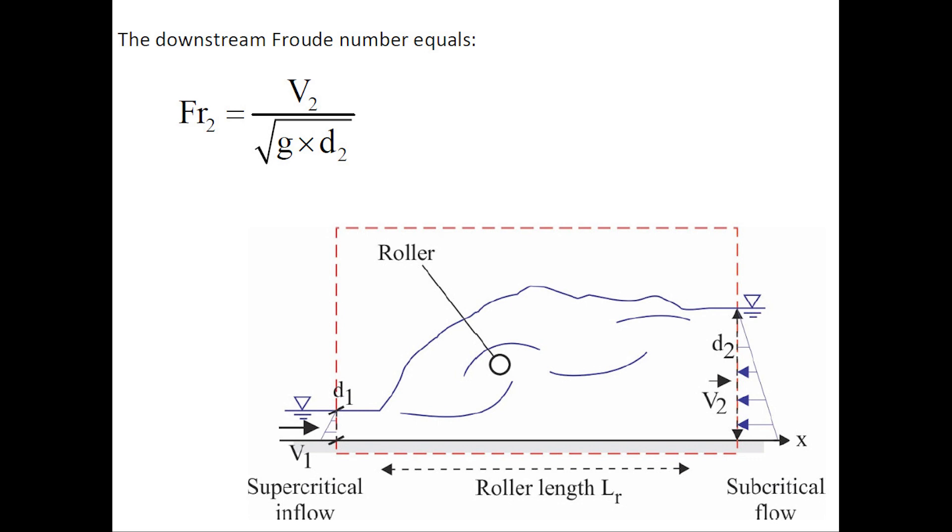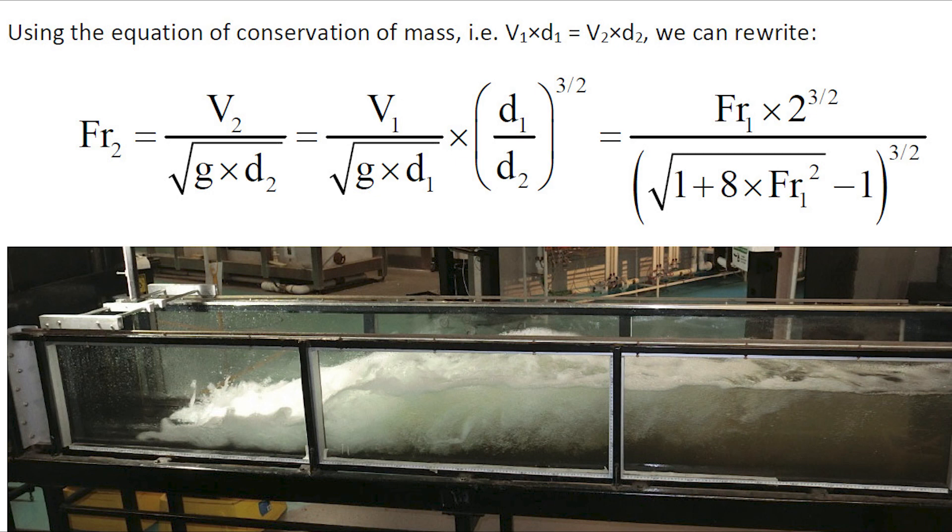The downstream Froude number Fr2 can be expressed on combining with the equation of conservation of mass, where we obtain an analytical solution as a function of the upstream Froude number.